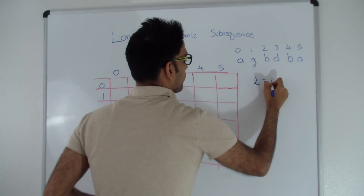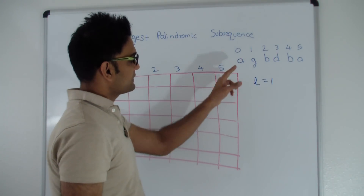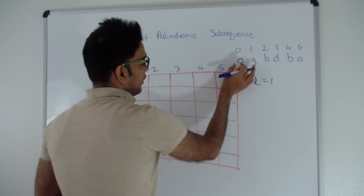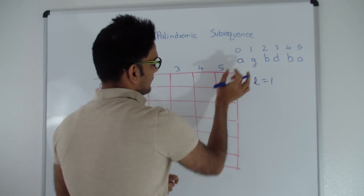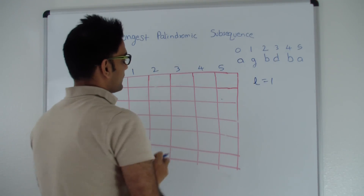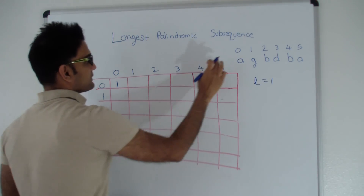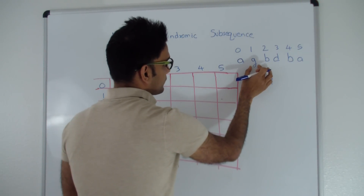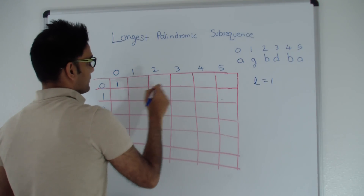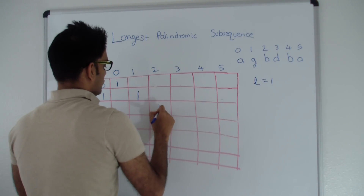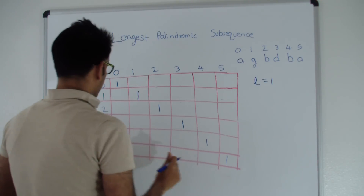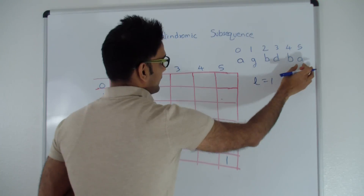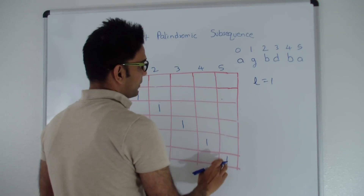Let's start with L equal to 1 — considering one character at a time. If I only had a string of length 1 and that string was A, what is the longest palindromic subsequence? That goes at cell 0,0 and is 1. Similarly, for each single character G, B, D, B, A, the longest palindromic subsequence is of length 1. So cells 1,1 through 5,5 are all filled with 1.